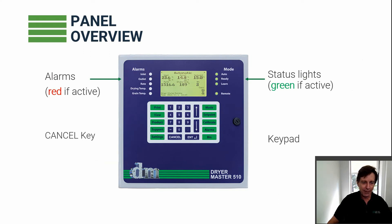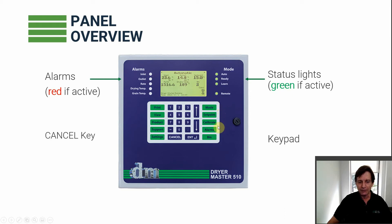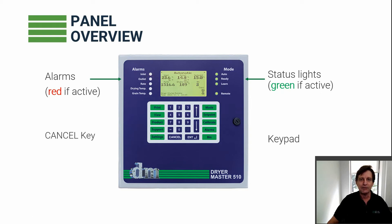The information from the moisture sensors comes back to the Dryer Master panel, which we've designed to be as simple as possible. Each key only takes you a couple of levels deep into the menu. The key keys are Mode, Set Point, and Calibrate — the three keys you'll use every day. Over here we have the alarms; if something is in alarm, one of those lights will go red, visible from across the room. You can also set it up to send you a text on alarm if you have DM Mobile.